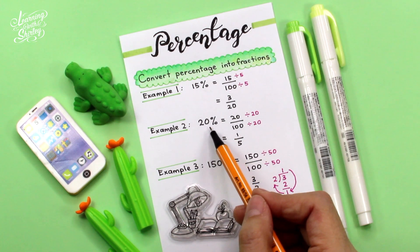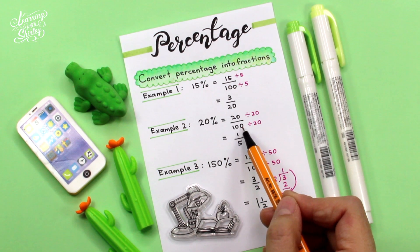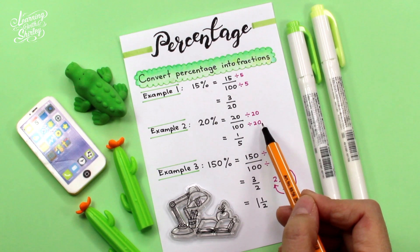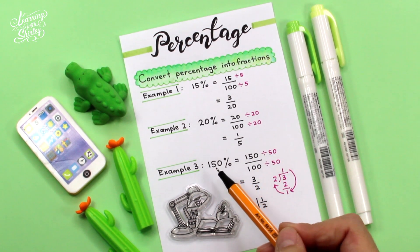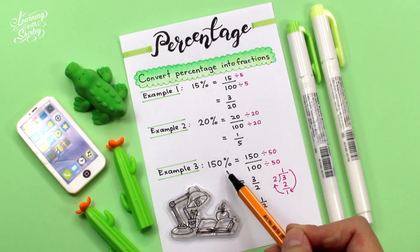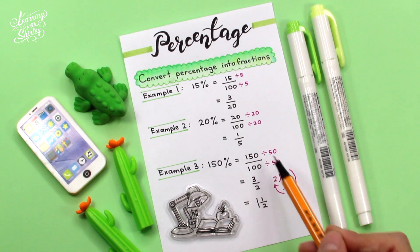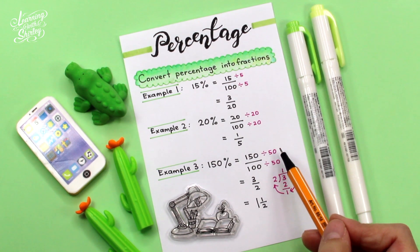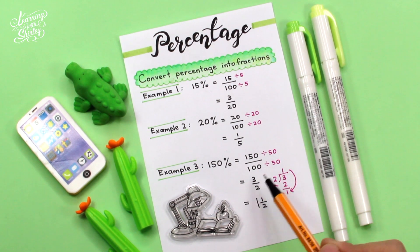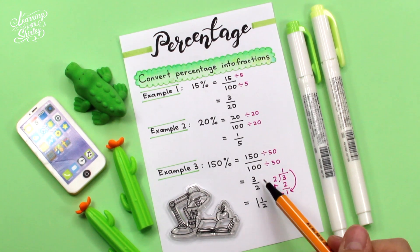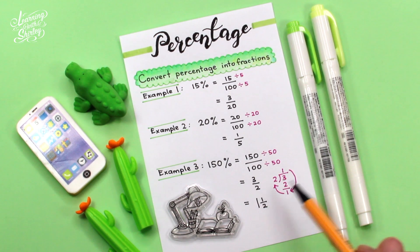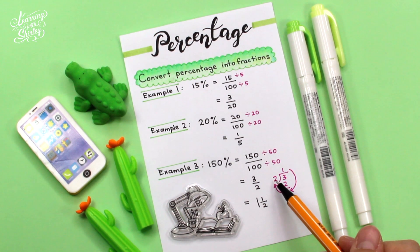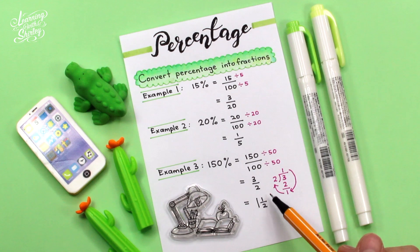Let's look at example two. 20% means 20 over 100. The top and bottom we divide by 20 to simplify it, so we'll get 1 over 5. Let's look at example three. 150% means 150 over 100. To simplify this, we divide by 50 top and bottom and we'll get 3 over 2. To change this improper fraction to a mixed number, we divide: 3 divided by 2 is 1 remainder 1, so the answer is 1 and 1 over 2.